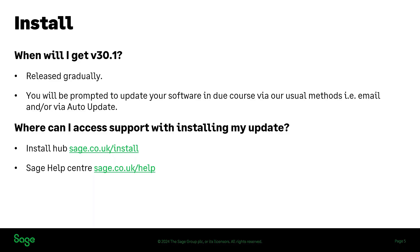So first question: when will I get version 30.1? It is available already. It's going to be released gradually in terms of auto update prompts that you get in your software — those will come in due course. But you can get access via the install hub to version 30.1. If you'd rather wait until you are prompted, you'll either get an auto update prompt in your software when you log in, or you may receive email communication letting you know that there is an update available.